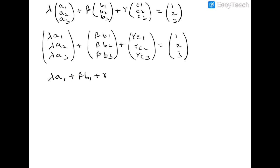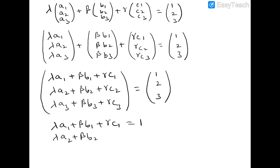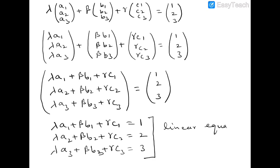Adding corresponding terms we get: (λa1 + βb1 + γc1, λa2 + βb2 + γc2, λa3 + βb3 + γc3) = (1, 2, 3). Two vectors are equal if their corresponding terms are equal, so: λa1 + βb1 + γc1 = 1, λa2 + βb2 + γc2 = 2, and λa3 + βb3 + γc3 = 3. These are in the form of linear equations with unknowns λ, β, and γ.